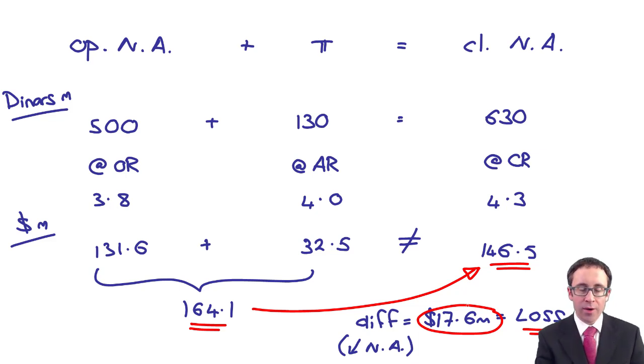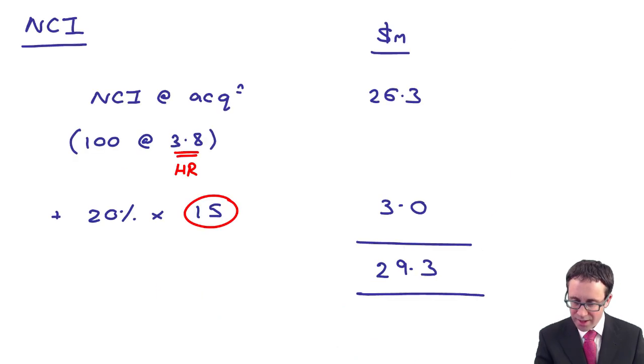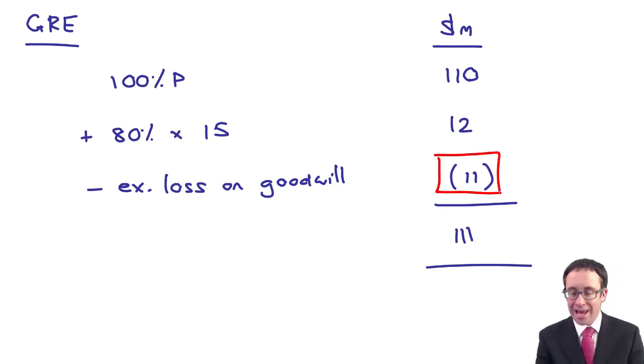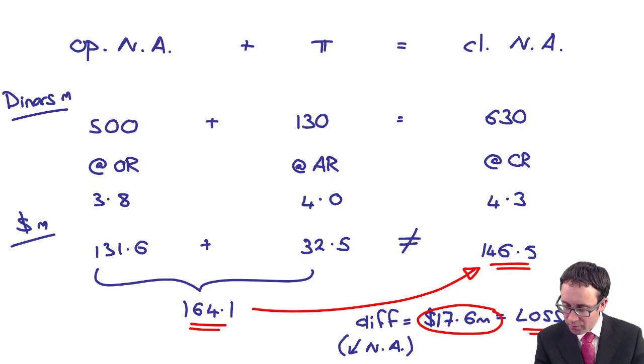So here, what you would include with Imer is that 17.6 million, but don't forget as well, there would also be the exchange gain or loss on our goodwill. So here, if memory serves me right, that exchange gain or loss on goodwill, if I can go back, the exchange gain or loss on the goodwill is there at 11.